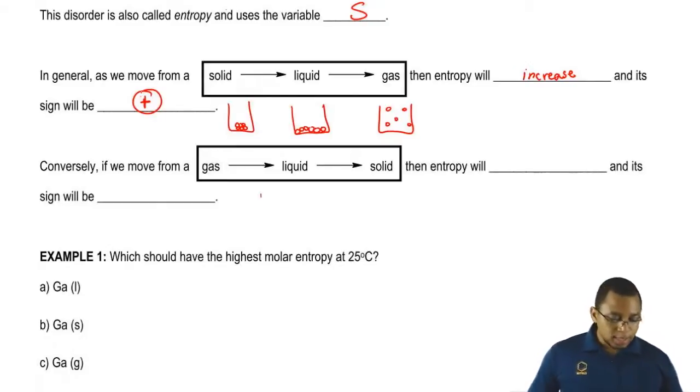So in this direction, we're going to say that entropy decreases because order is increasing. And if entropy is decreasing, the sign of entropy will be negative.